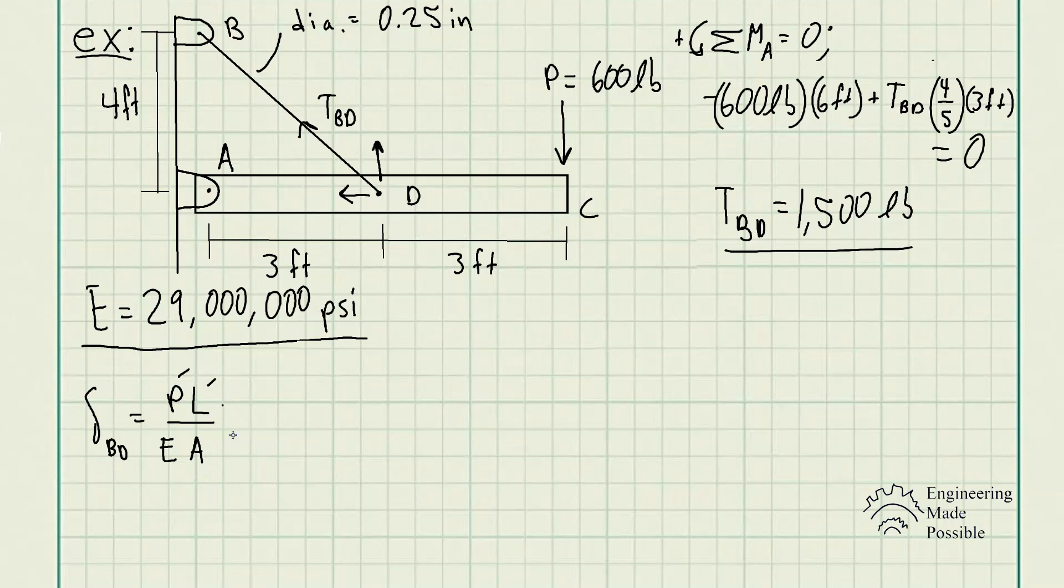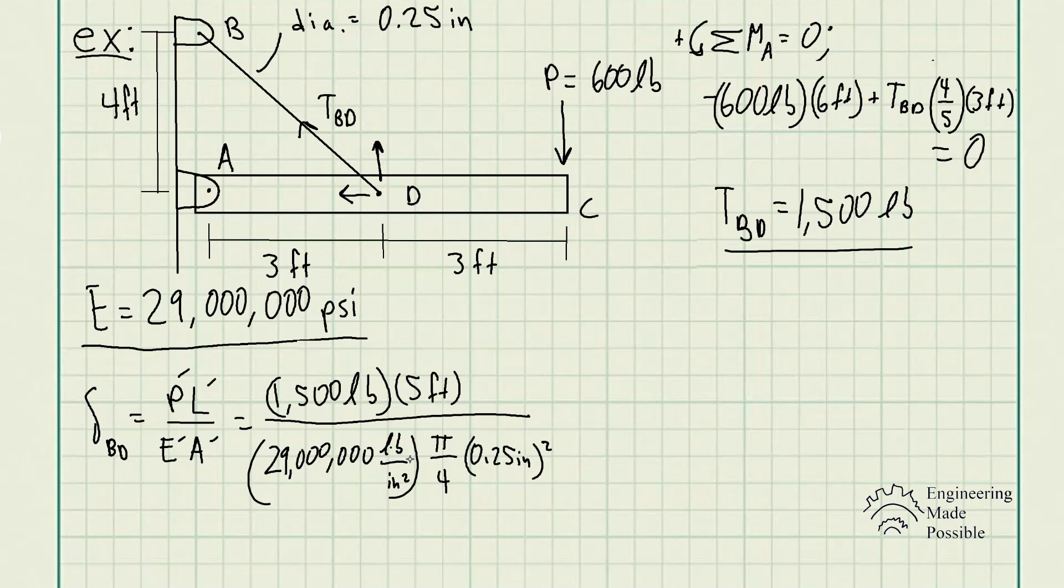We have all the given parameters, and so we solve for how much that wire stretches or deforms. We have 1,500 pounds times 5 feet divided by 29 million pounds per square inch times the cross-sectional area, pi over 4 times the diameter squared.